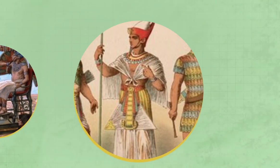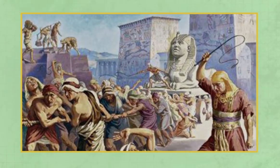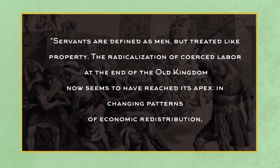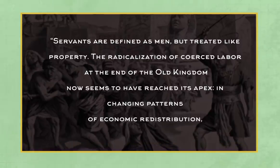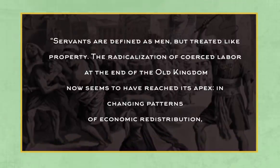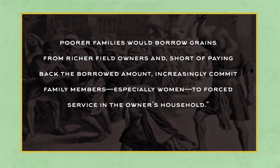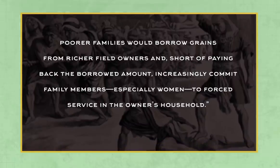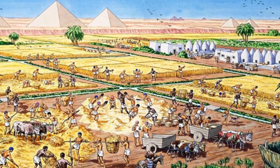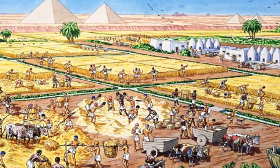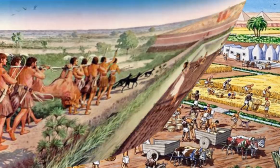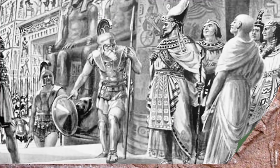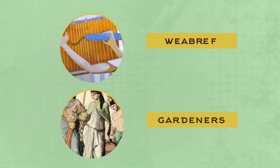By the time of the Middle Kingdom, historian Antonio Loprieno describes forced slavery thusly: servants are defined as men but treated like property. The radicalisation of coerced labour at the end of the Old Kingdom now seems to have reached its apex. In changing patterns of economic redistribution, poorer families would borrow grains from richer field owners and, short of paying back the borrowed amount, increasingly commit family members — especially women — to forced service in the owner's household. The definition 'royal labourer' also emerged — state-owned slaves acquired through military campaign or trade, seen at the same position as the Asiatic slaves, who had a variety of duties as field workers, gardeners, weavers, and servants.